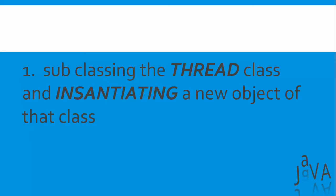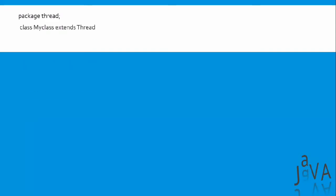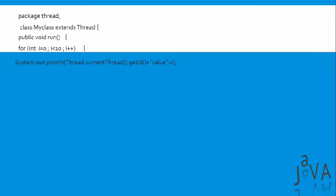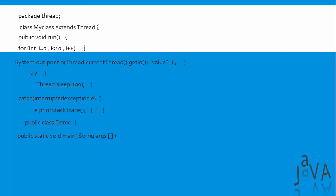The first approach is subclassing the Thread class and instantiating a new object of that class. Let's understand this: we have a package with a class called MyClass which extends the Thread class. We need to go through step by step things we don't understand, like the currentThread.getID() method and Thread.sleep().